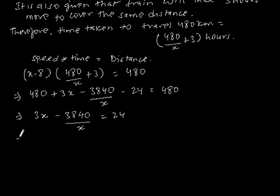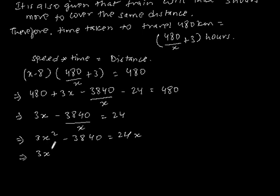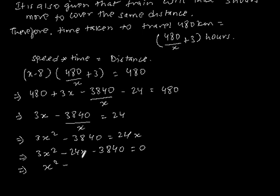This implies 3x - 3840/x - 24 = 0, which gives the quadratic equation 3x² - 24x - 3840 = 0, which is our answer.